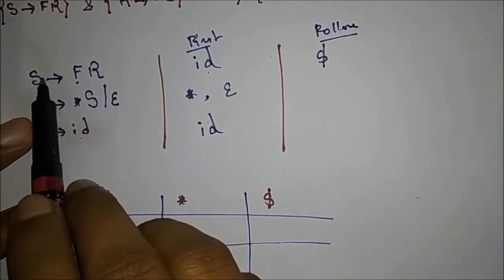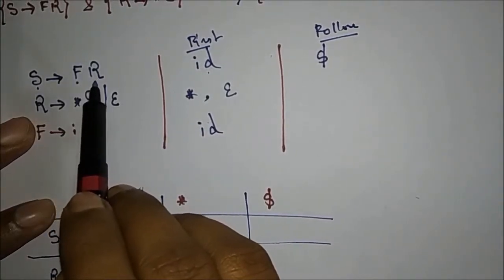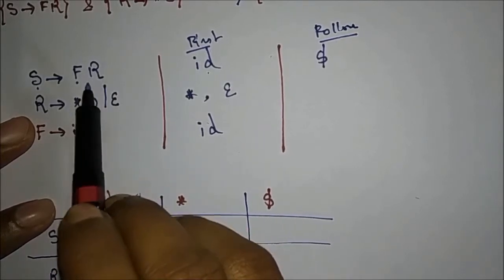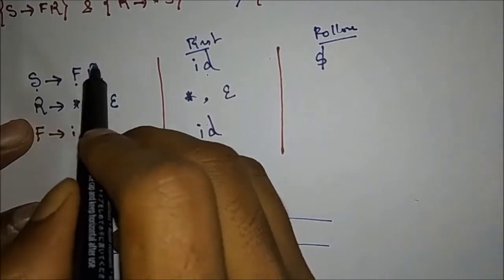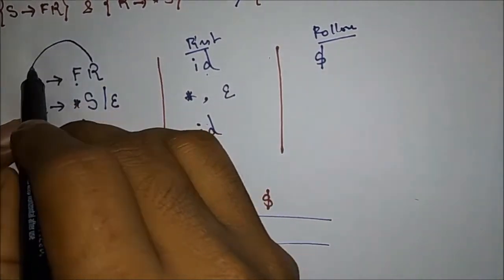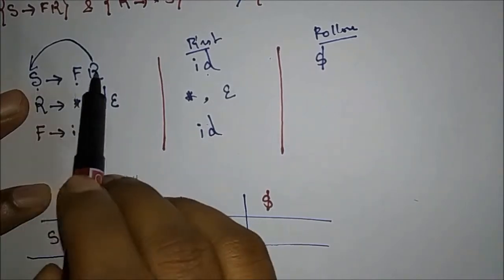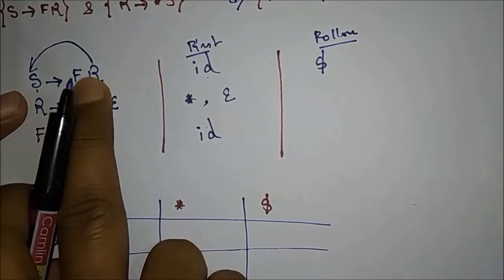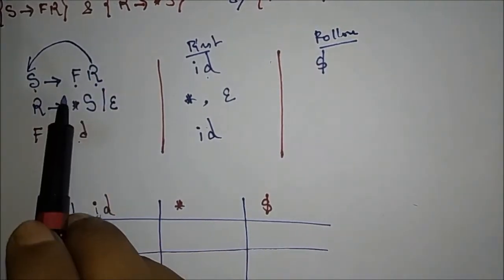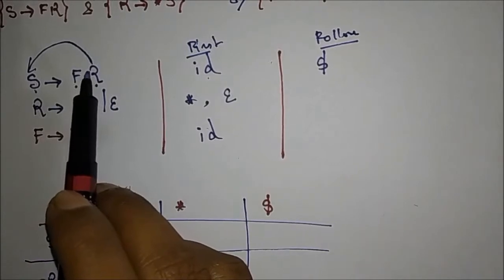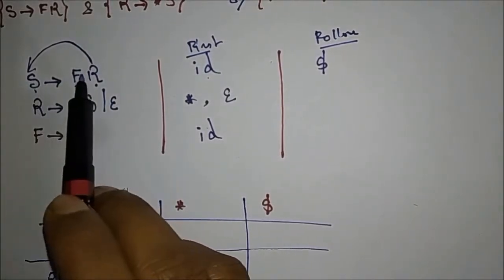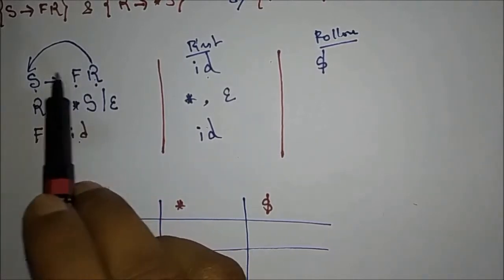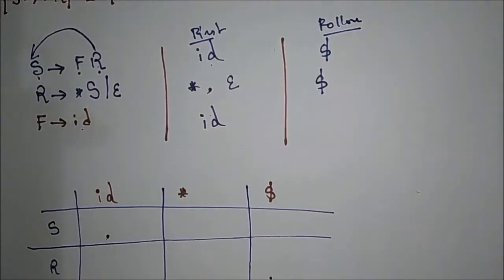FOLLOW(R): R is present on the right-hand side in S → F R. R is followed by nothing — no variable or terminal follows R. So we go to the left-hand side and write the FOLLOW of the left-hand side variable. Therefore FOLLOW(R) = FOLLOW(S) = {$}.